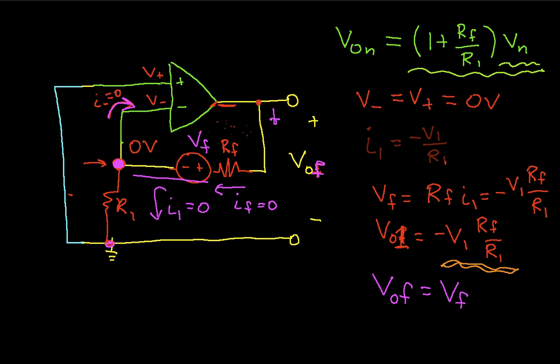And finally, the output due to the noise generated by RF is just VF. It has a gain of one.